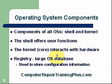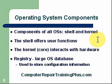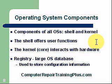Operating system components: all operating systems have a shell and a kernel. The shell is where we have our user interface so that the user can operate the computer. The kernel is the core of the operating system that runs the hardware and interfaces with applications. The shell offers user functions; the kernel interacts with the hardware. The registry is a very large database in the operating system used to keep all configuration and settings for both software and hardware.